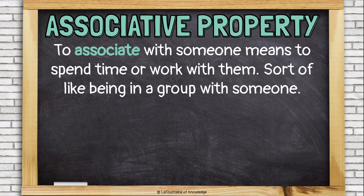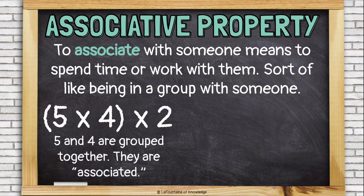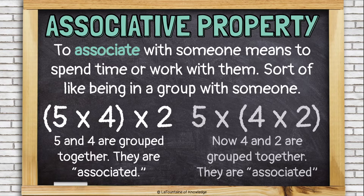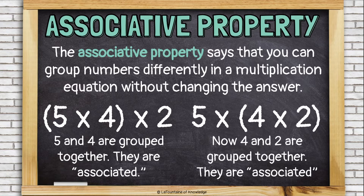To associate with someone means to spend time or work with them — sort of like being in a group with someone. Five and four are grouped together in this problem; that's why they have the parentheses around them — they are associated. In this one, the four and the two are grouped together — they are associated. The associative property says that you can group numbers differently in a multiplication equation without changing the answer.